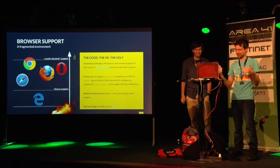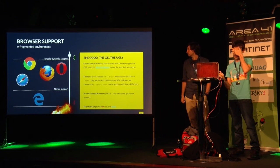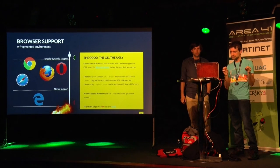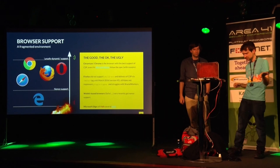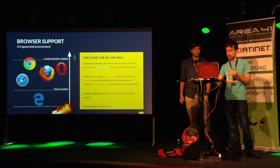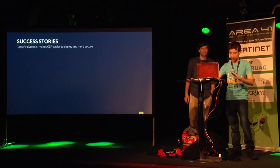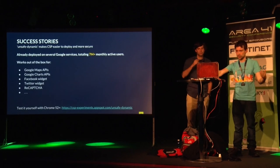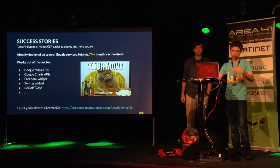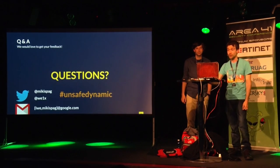Chrome has the best support. Firefox and Blink browsers like Opera, and WebKit browsers such as recent Safari - they all have nonce support. Edge does not have nonce support but has partial CSP2. Very, very quickly: at Google, we were able to deploy unsafe-dynamic in a lot of services that serve millions of users - at scale and in big data. Any questions?